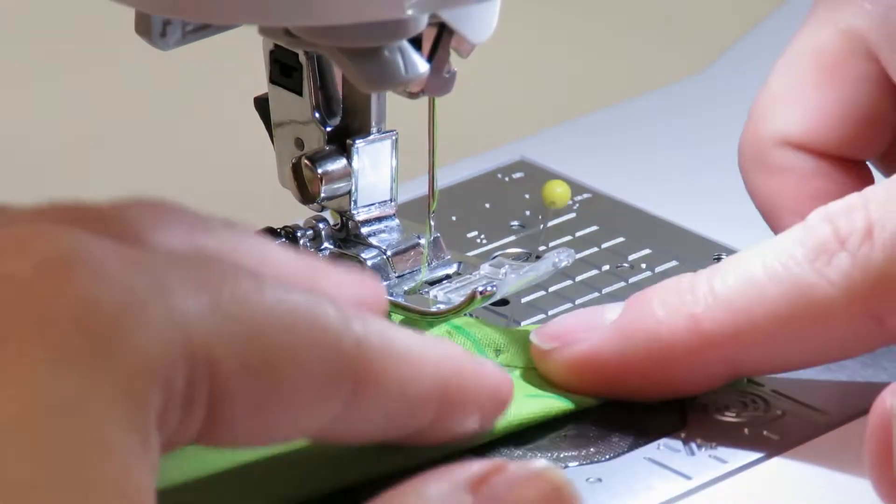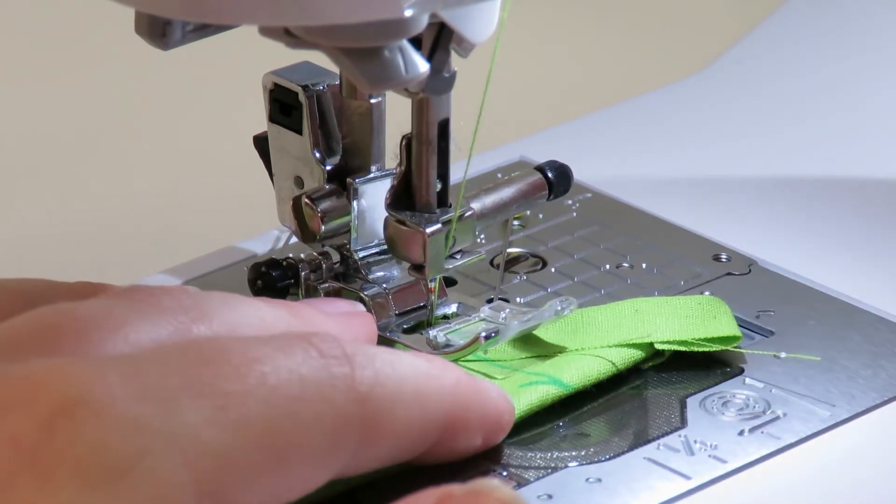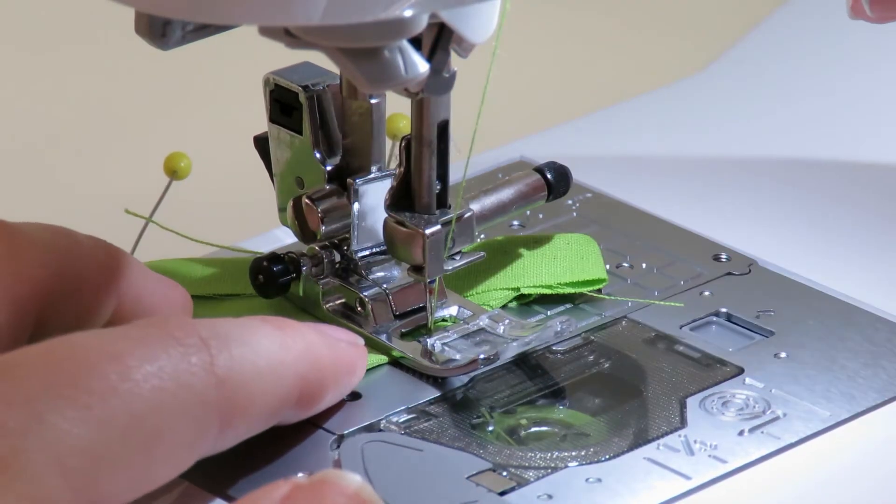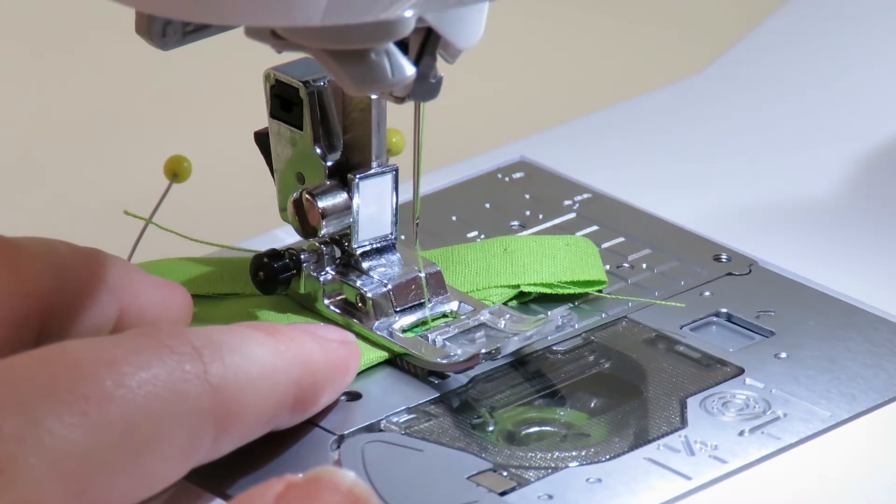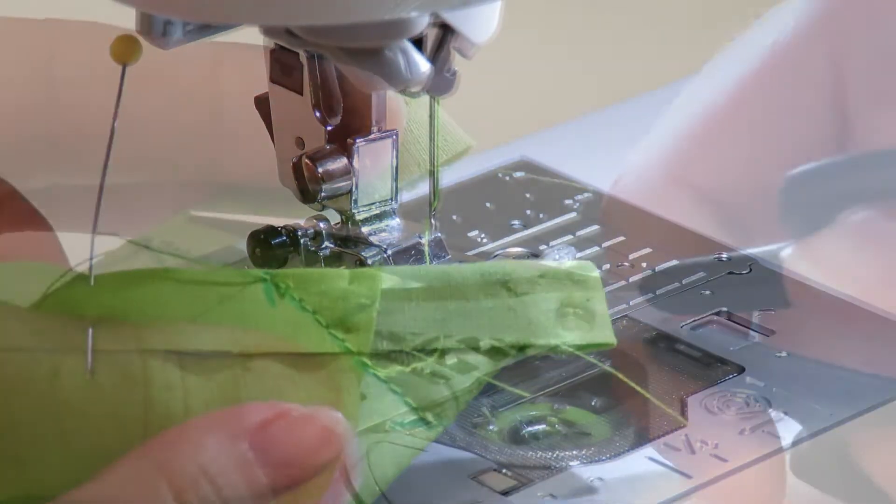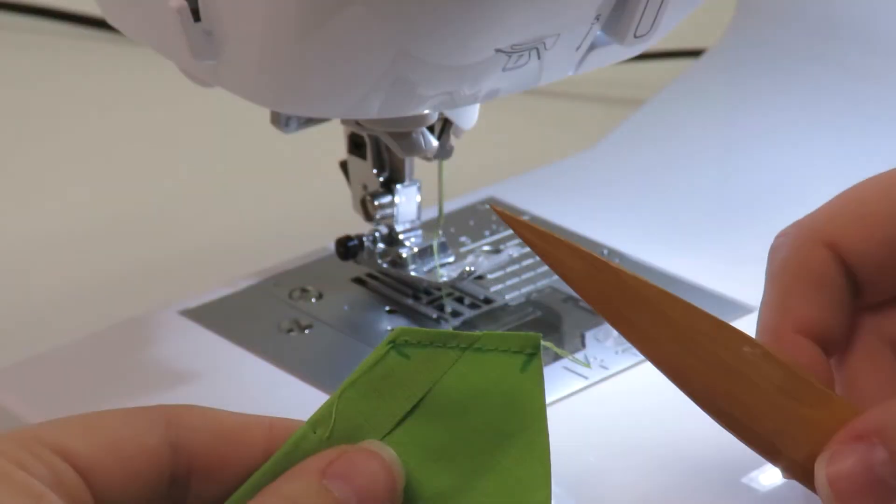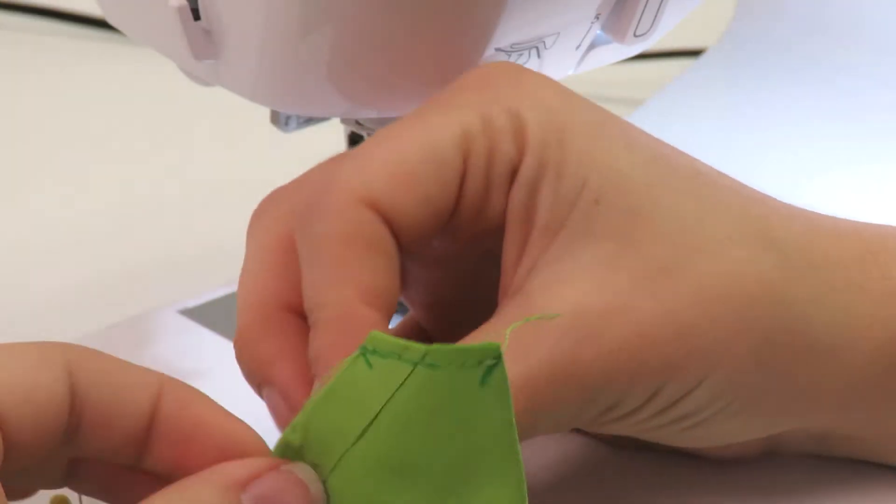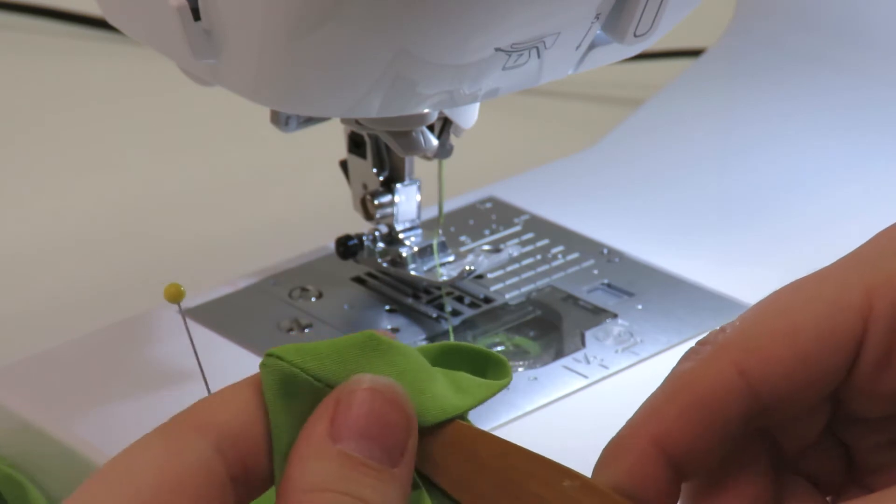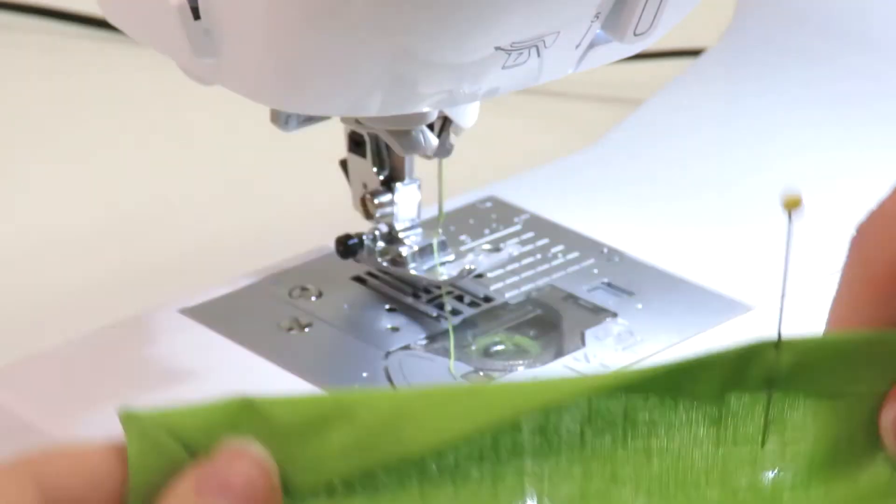Continue to your sewing machine and stitch on the diagonal line with a straight stitch. Cut next to the line, leaving at least five millimeters. Next, turn the corner inside out and push the corner out with a corner turner to create a neat outer corner. Repeat these steps with the other three corners.